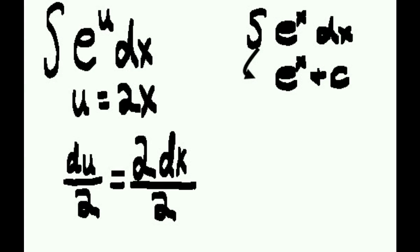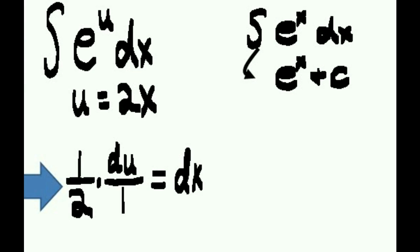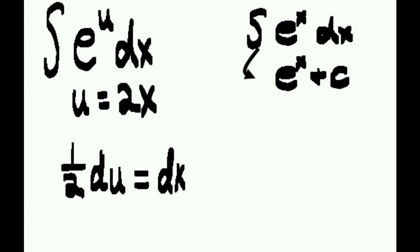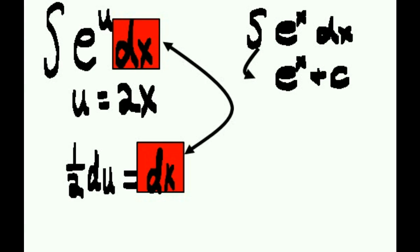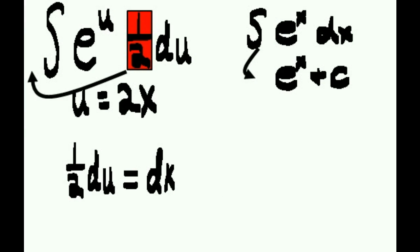Now we divide both sides by 2. 2 cancels on the right, and we get du/2 equals dx, or du over 1 equals dx. Let's move it over a bit like so, or 1/2 du equals dx. Now look, we can substitute here. Let's replace dx with its equivalent, 1/2 du, like so.